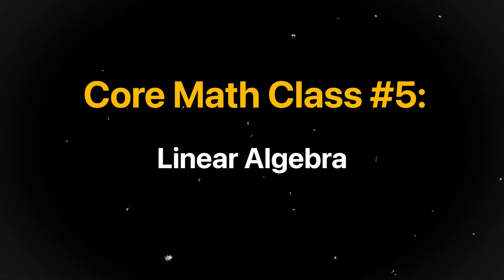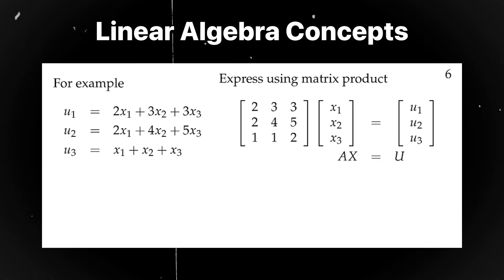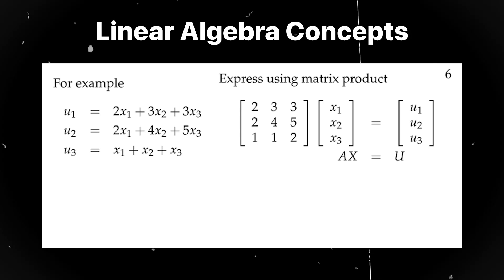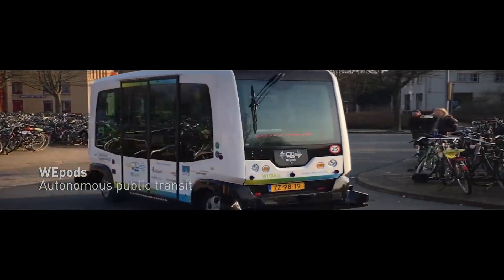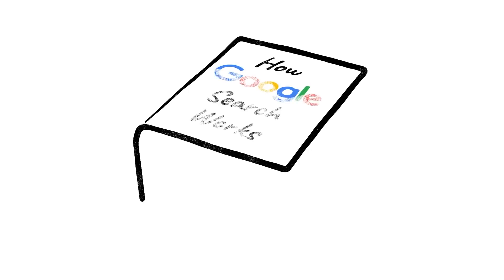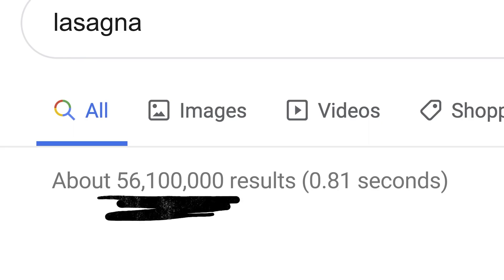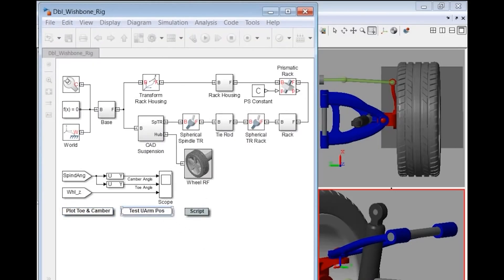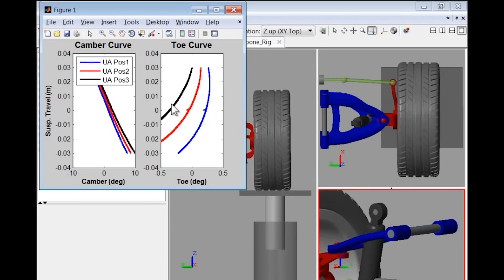Moving on, we have linear algebra. This class is very practical and teaches you how to manipulate and solve linear systems of equations, as well as things like vectors, matrices, and eigenvalues. It has a lot of real-world engineering applications and can be used to predict the relationship between drug dosage and patient blood pressure using a linear regression model, to compute the ranks of web pages — which is what Google's PageRank algorithm is famous for — or to design a suspension system using software, the most common ones being MATLAB and Python.